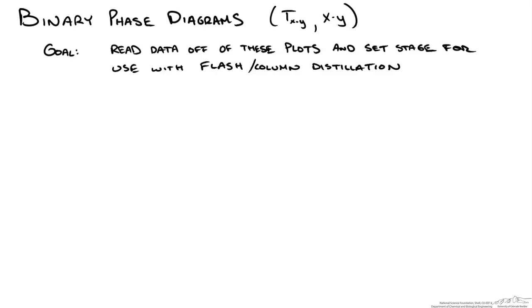We are going to run through reading binary vapor-liquid equilibrium phase diagrams so that we can use them in binary flash and column-based distillation calculations like those done using the McCabe-Thiele method.